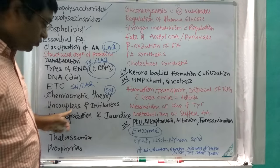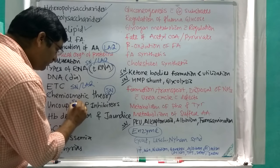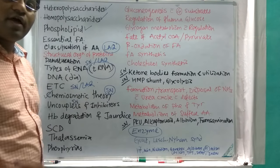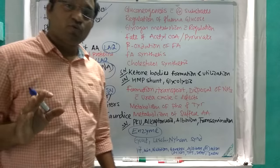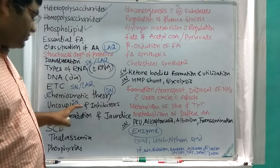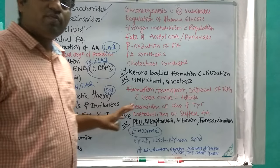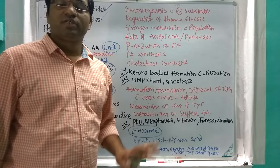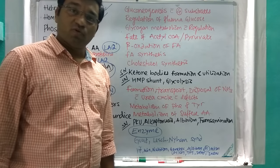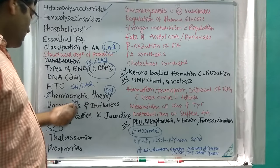Uncouplers — physiological and chemical uncouplers — and inhibitors of electron transport chain and oxidative phosphorylation are very important for short notes and MCQ purposes.